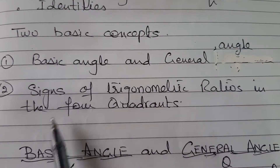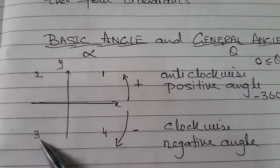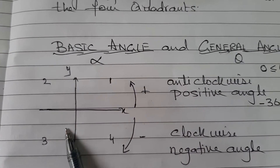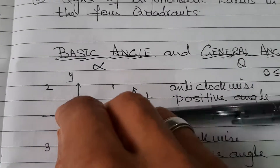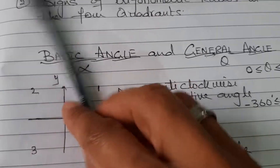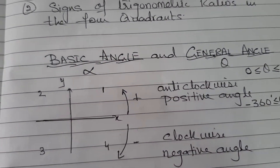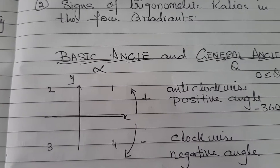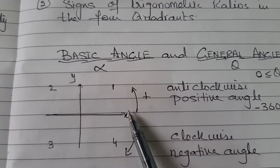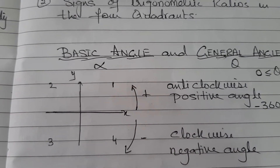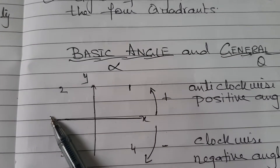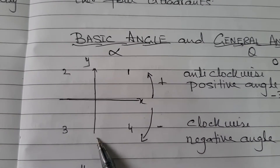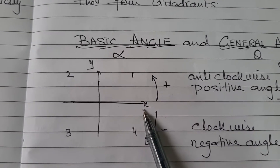What do I mean by sine in each of the four quadrants? If you divide a circle into four parts, this is called the first quadrant, this is the second quadrant, third quadrant and fourth quadrant. First quadrant means we are talking about angles 0 to 90 degrees. Second quadrant means 90 to 180 degrees. Third quadrant means 180 to 270 degrees and fourth quadrant means 270 to 360 degrees.